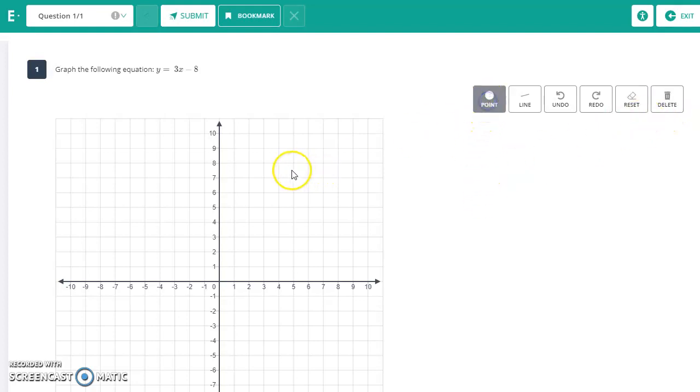The point option is literally a point on your graph. The line is a line on your graph by selecting two places on your graph. The undo will undo step by step, the redo will bring it back step by step. The reset will delete everything and so will the trash, the delete button.